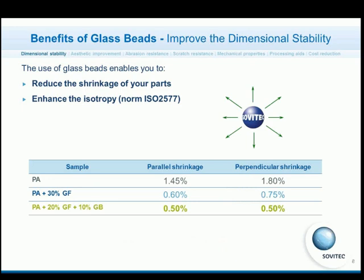Another advantage is to enhance the isotropy of the shrinkage. You can see on these figures that if we compare neat polyamide to polyamide with 30% glass fibers, we already decrease the value and improve the shrinkage of the product. But by using a small amount of glass beads instead of glass fibers, we can decrease it further and also obtain good isotropy, easily controlling the effect of injection in the mold.